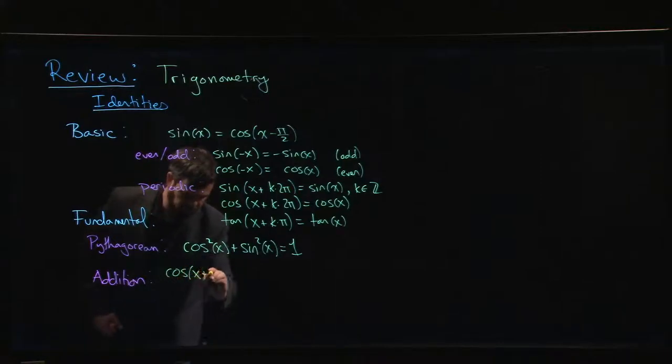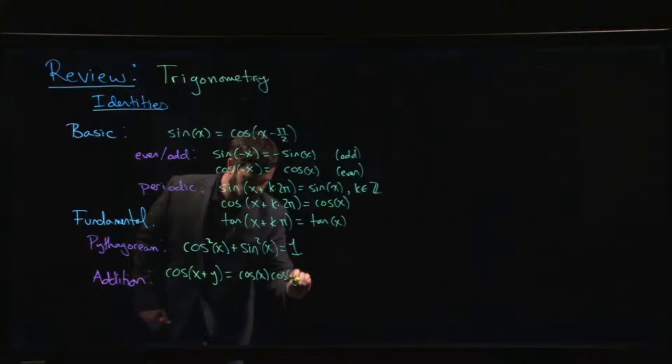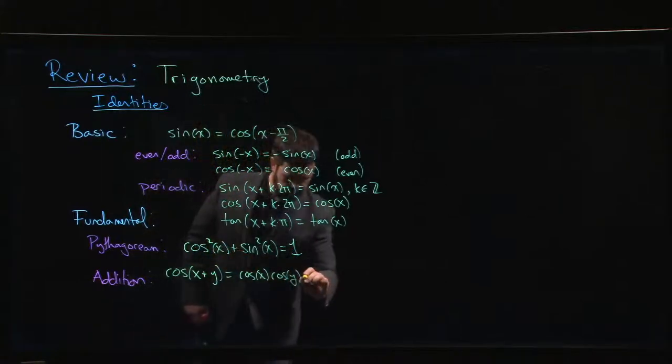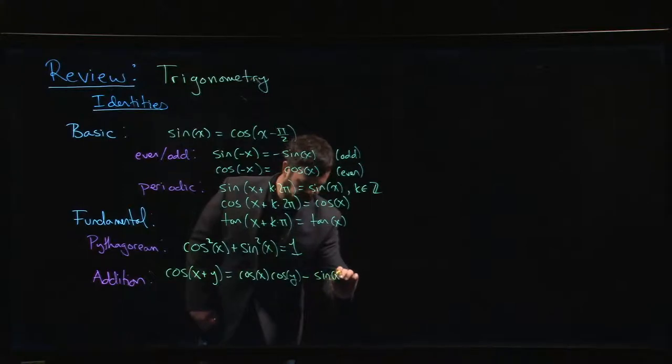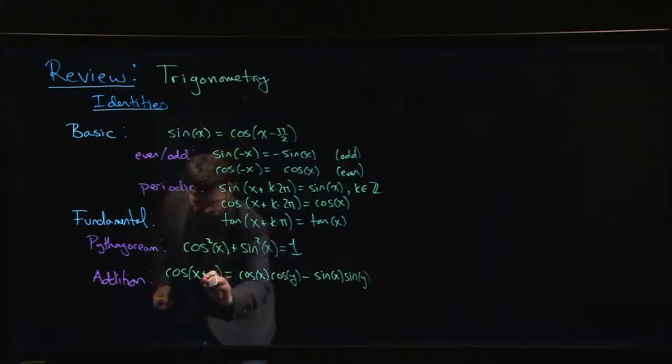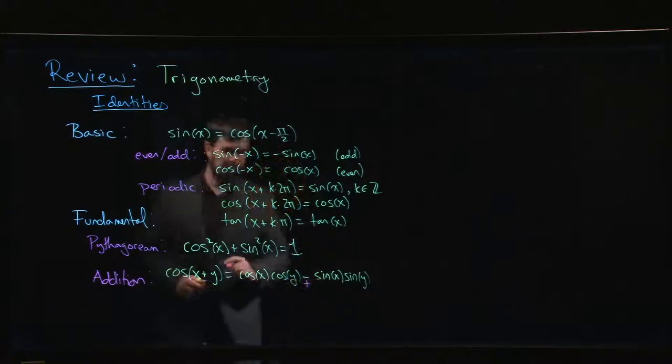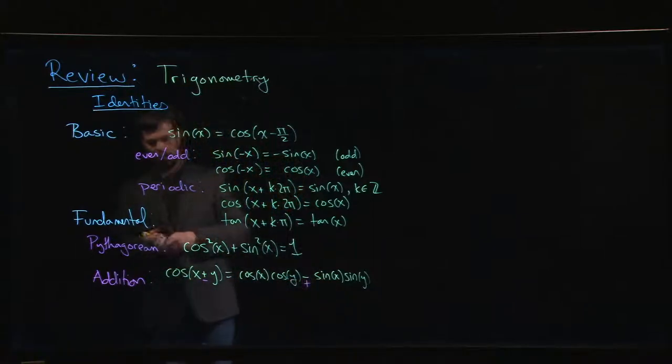So for cosine, cosine of x plus y is cos x cos y, and then it's the opposite sine, minus sine x sine y. If you were doing subtraction, if it was x minus y, that minus there becomes a plus.